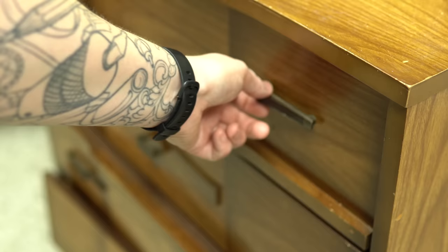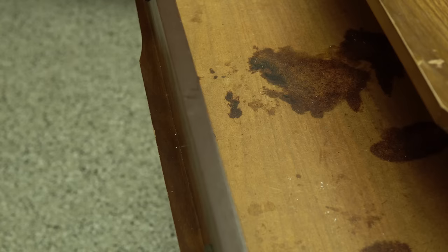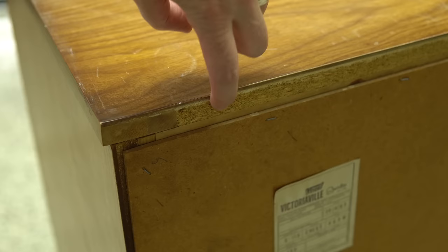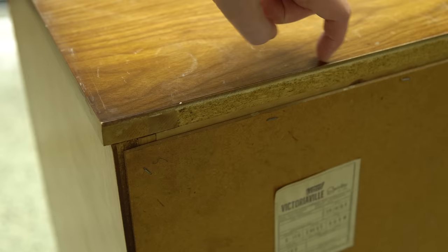There was some kind of funkiness going on inside this top drawer. It smelled like baby poo, and considering I found a bunch of little clips and barrettes, I wouldn't be surprised if this was in a kid's room.